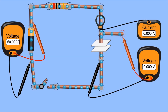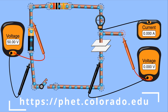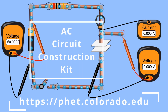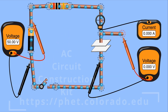The first thing I want to do is consider some qualitative aspects of current and voltage of capacitors in DC circuits. What we're looking at here is a simulation from PhET from the University of Colorado in Boulder — specifically the AC circuit construction kit. I'm using the AC kit because the DC kit currently doesn't have capacitors in it, and this simulation will give us a good idea of the relationship between voltage and current qualitatively.